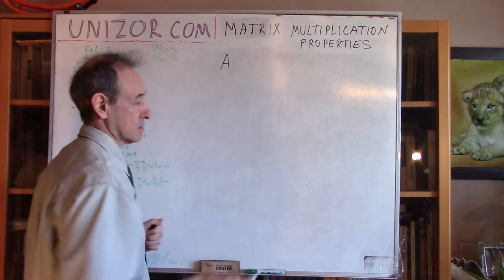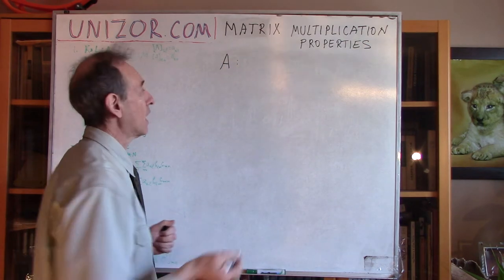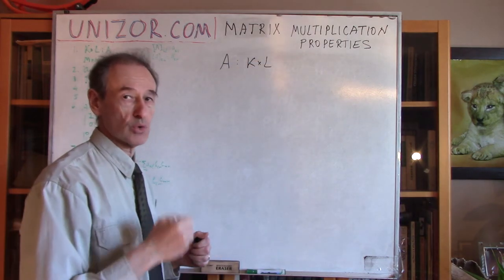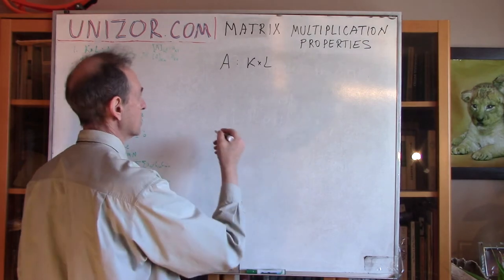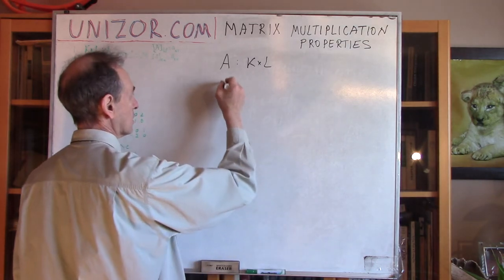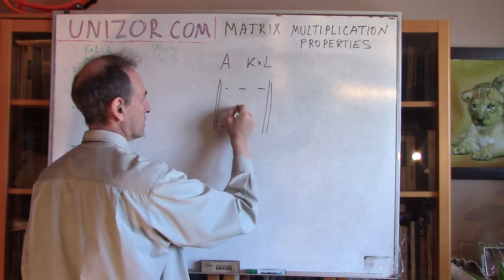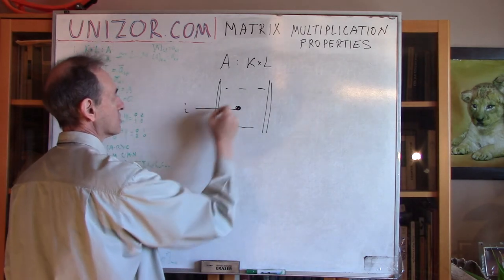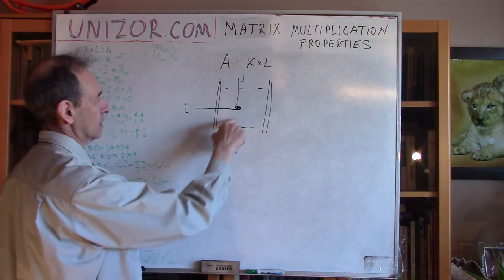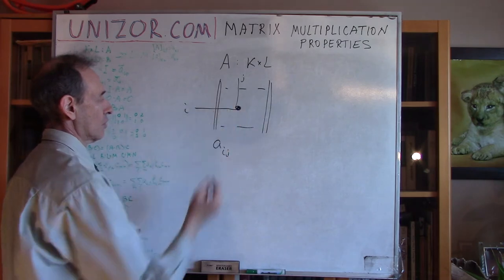Matrices will use capital Latin letters and will have dimensions — number of rows and number of columns — let's say K times L, which means K rows and L columns. The elements of these matrices will have two indices: the row index and the column index where they sit. If you have a matrix with certain elements, this particular element would be in the i-th row and j-th column. I will use lowercase letters for elements of the matrix, and i,j means the element which stands on the i-th row and j-th column.